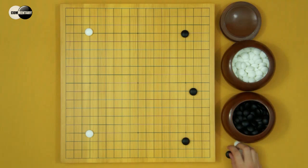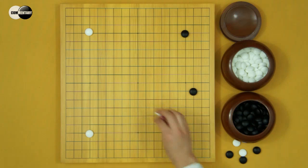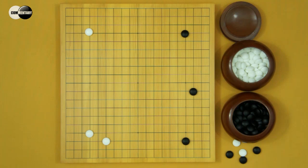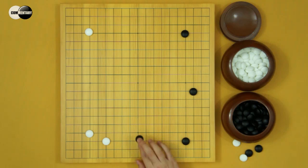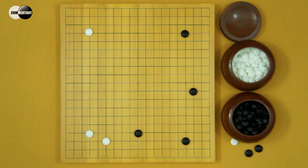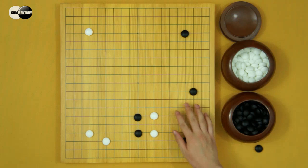So recently, in this situation, White keima. This move's value is big, and White's shape is very solid. In the future, White will kakari here. Black's territory would be small. And after this move, if Black extends, because White's shape is solid, White will kakari. Then White will attack Black and reduce Black moyo at the same time.